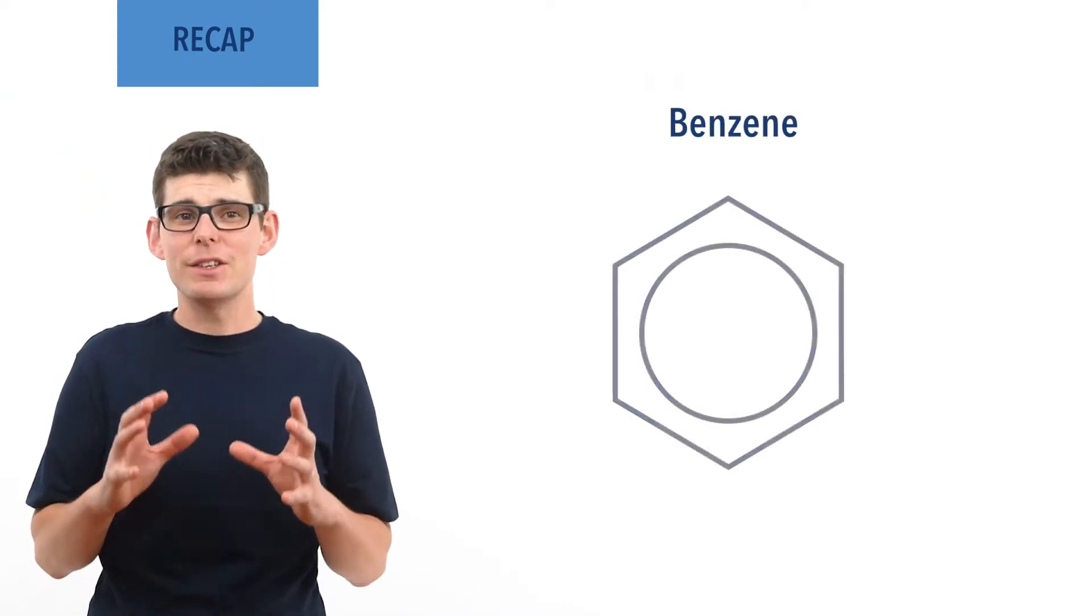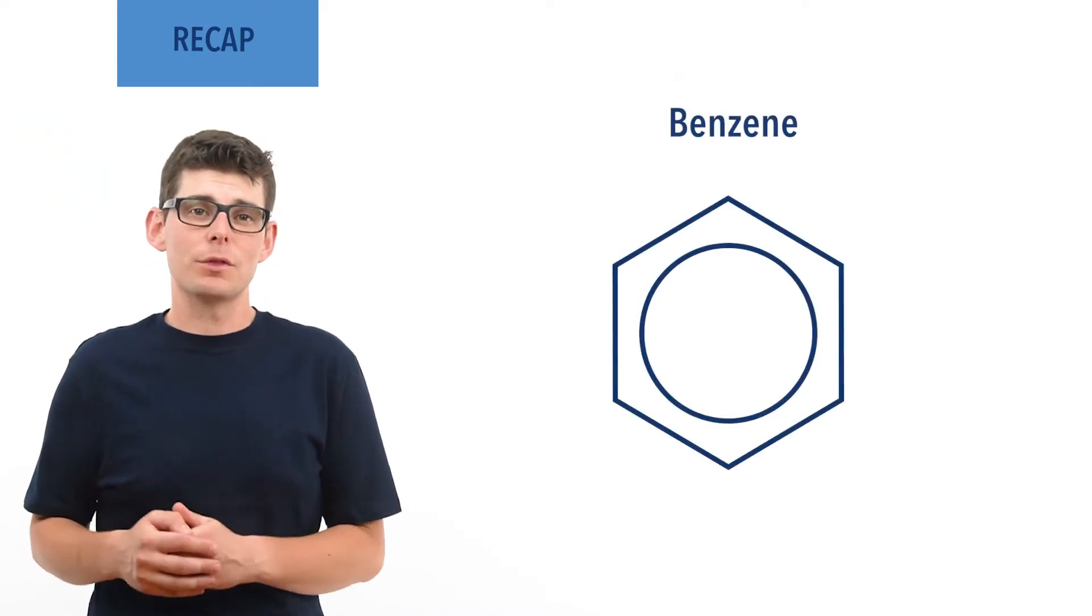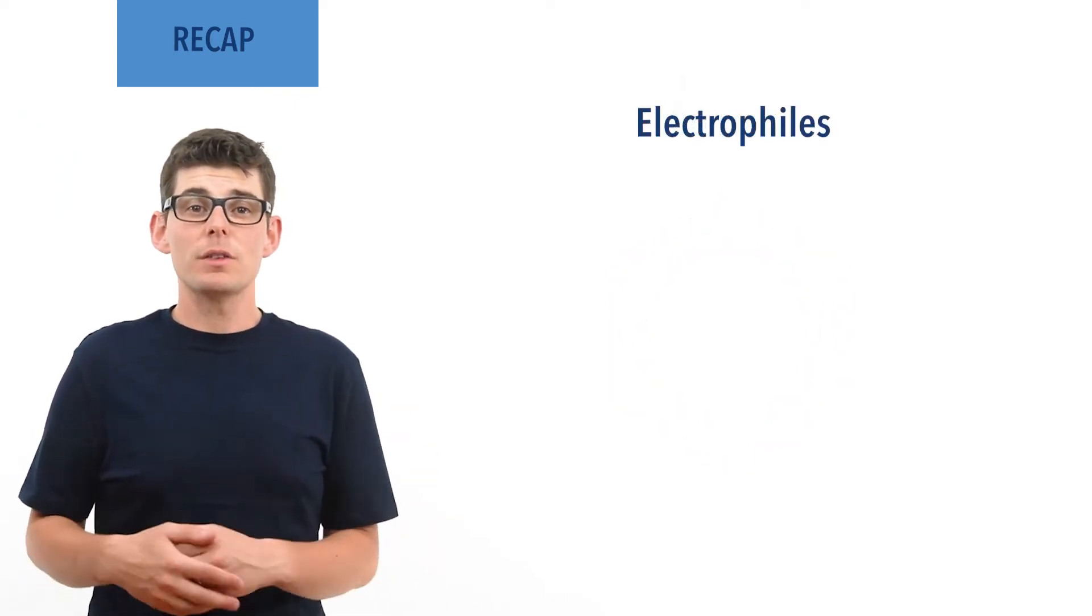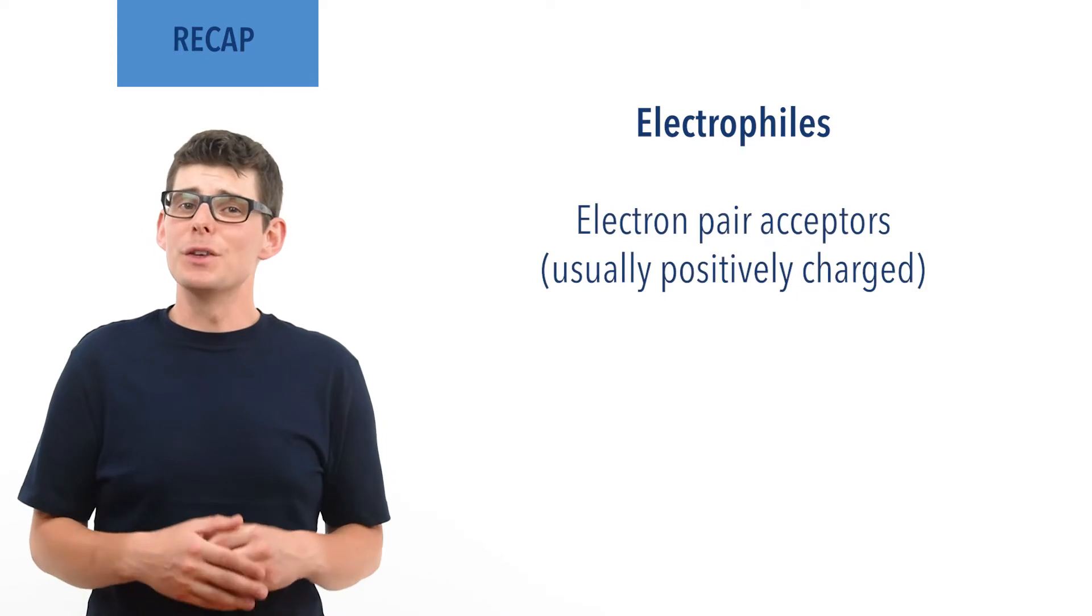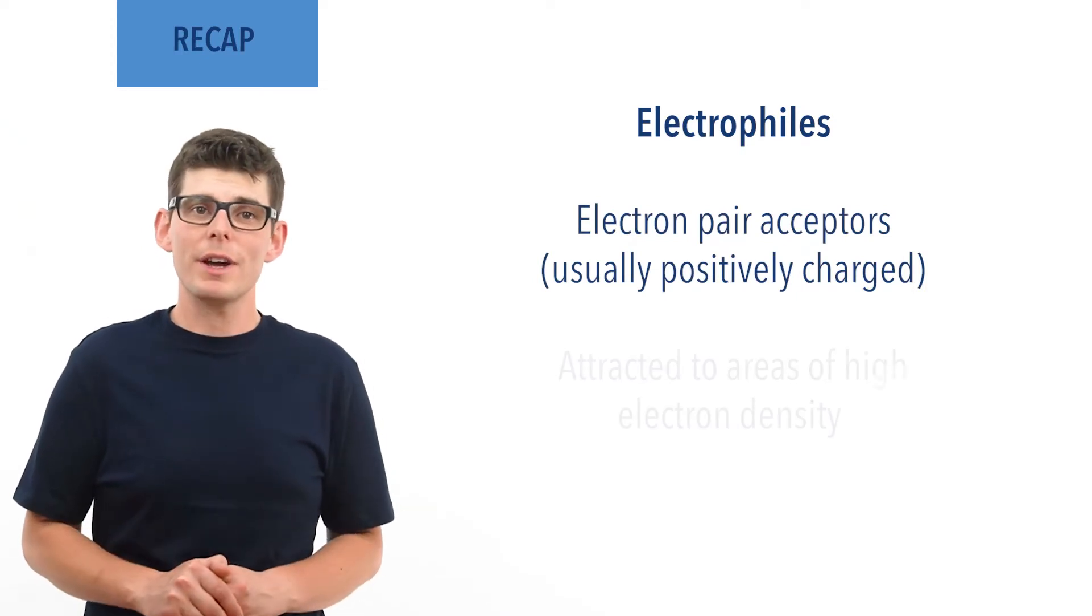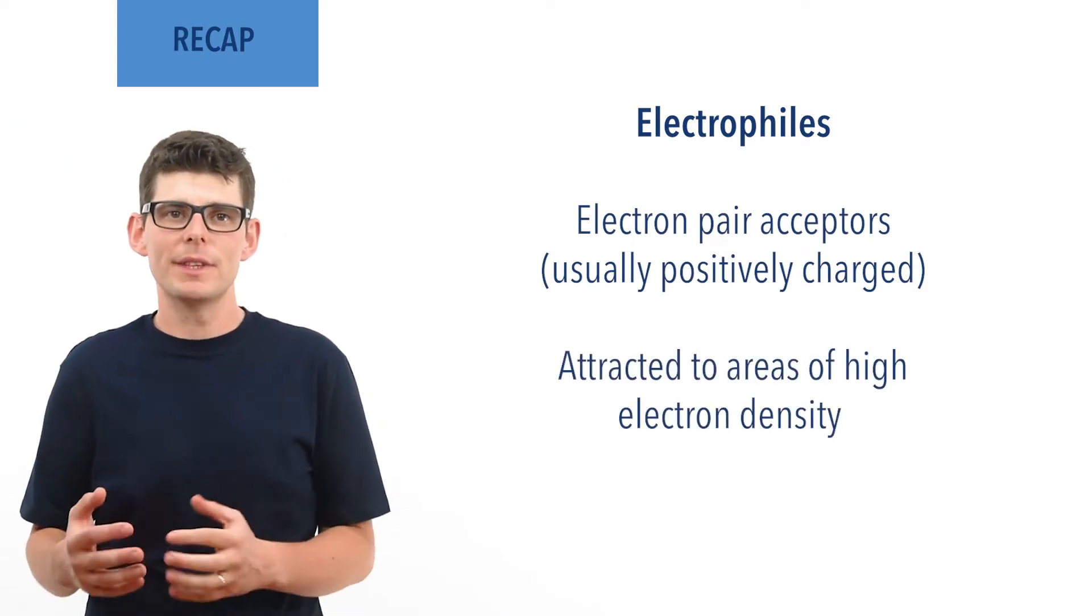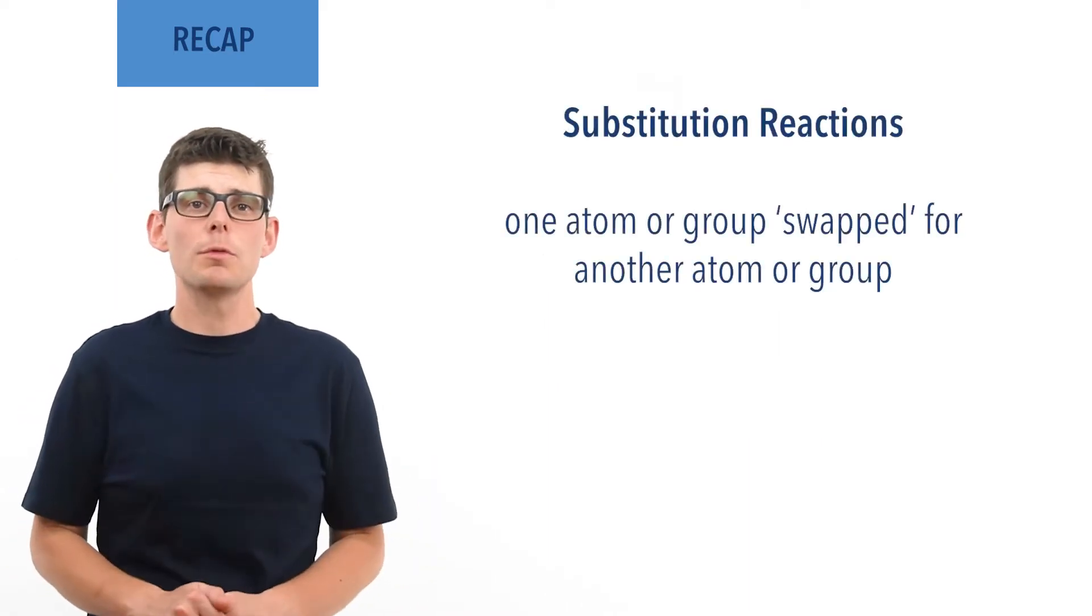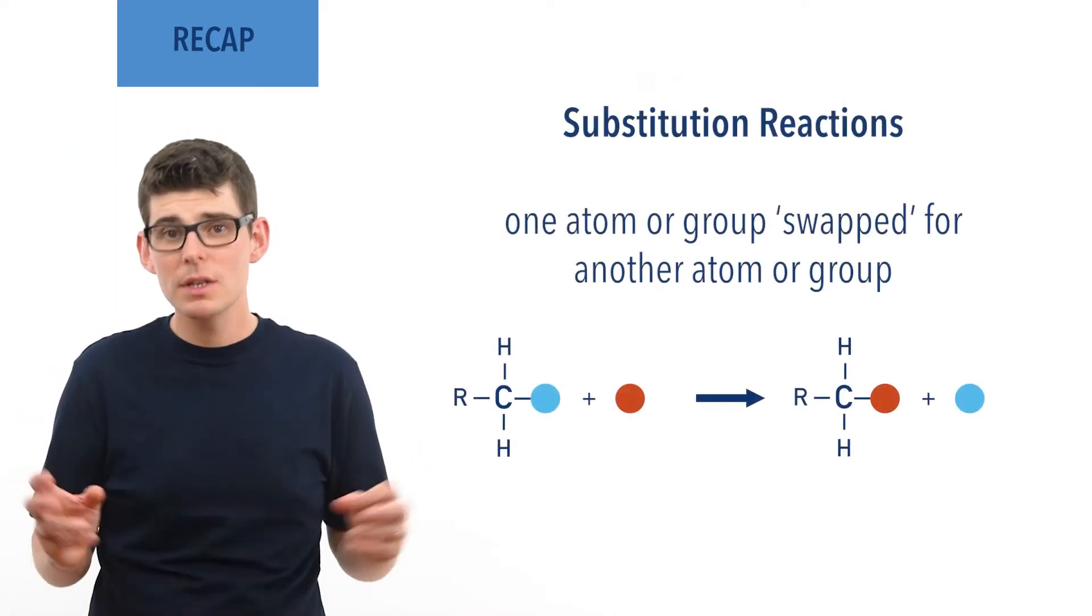Before we talk in detail about the mechanism there are a few essential ideas you need to be comfortable with. Benzene is a cyclic hydrocarbon with a delocalized electron ring from a pi bonding system. Electrophiles are electron pair acceptors, they are usually positively charged and are attracted to areas of high electron density. A substitution reaction is where one group or atom in a molecule is swapped for another group.